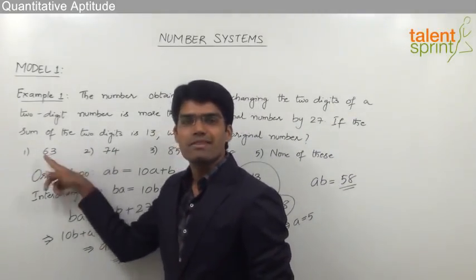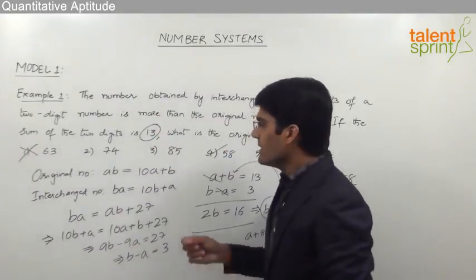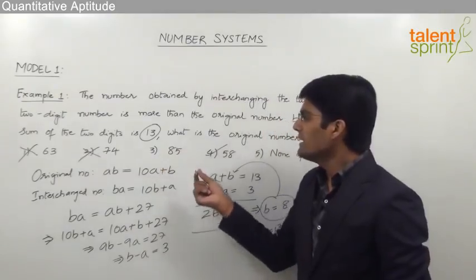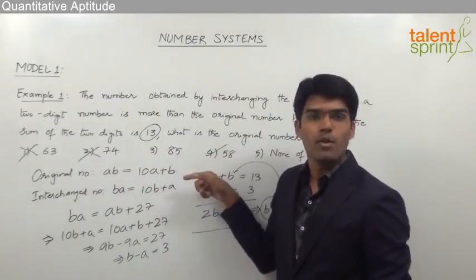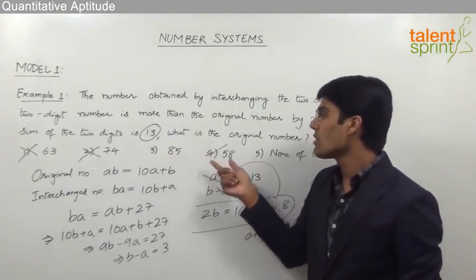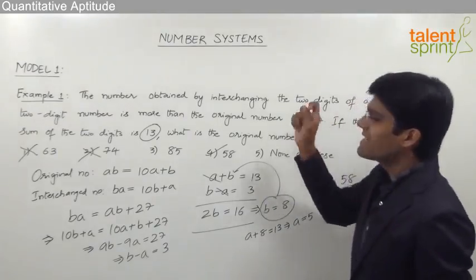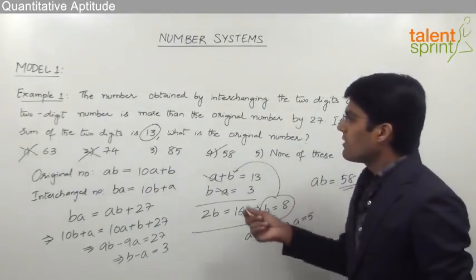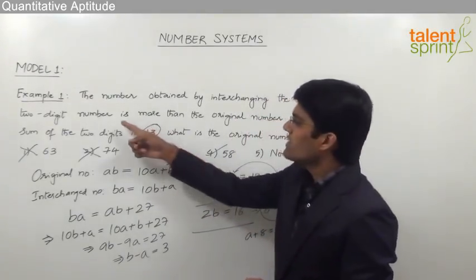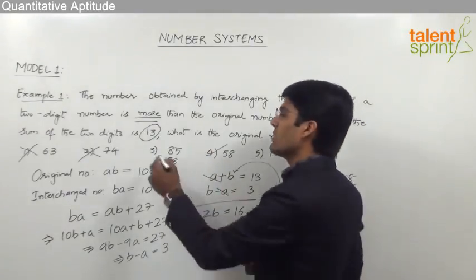Option 1 is 63: 6 plus 3 equals 9, which is not 13, so option 1 is eliminated. Option 2 is 74: 7 plus 4 equals 11, not 13, so option 2 is eliminated. Option 3 is 85: 8 plus 5 equals 13, so this may be a possible answer. Option 4 is 58: 5 plus 8 equals 13, so either option 3 or option 4 could be the answer. Now checking the first condition for option 3: if 85 is interchanged we get 58, and 58 is less than 85 — but the question says the interchanged number should be more. So option 3 is eliminated.